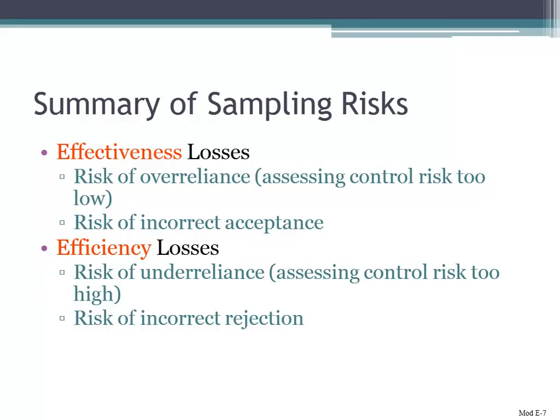Because by setting your internal controls too low, you have not looked at enough items — you're going to reduce your sample size as a result of that. And what happens if you reduce your sample size? You increase your risk.